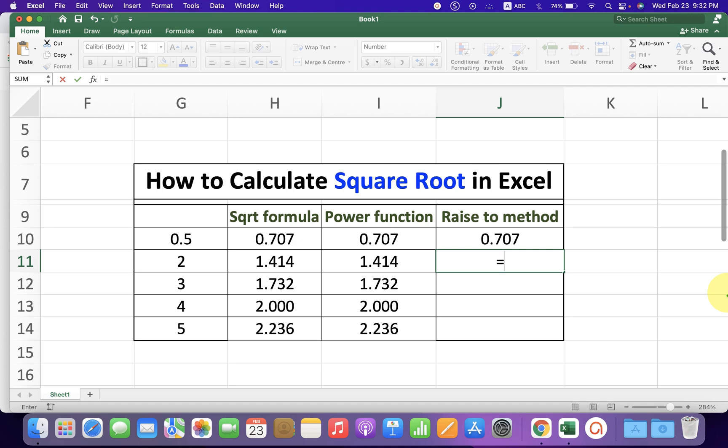Just type equals, select the number, press Shift+6 on your keyboard, and in the bracket type 1 divided by 2, then press Enter.